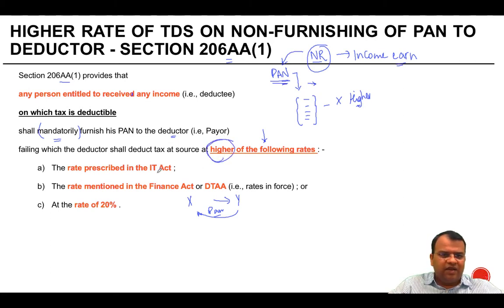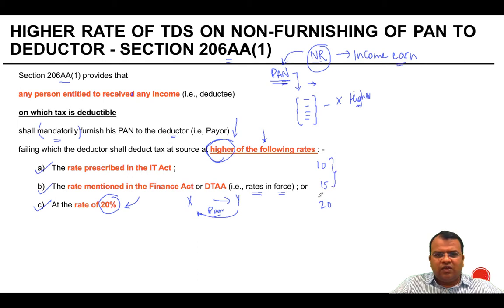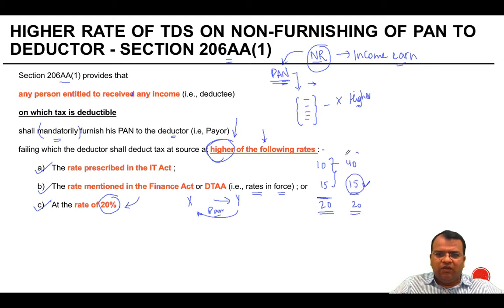The rates to be compared are: the rate prescribed under the IT Act, the rate mentioned in the Finance Act or DTAA (i.e., rates in force), or 20% — whichever is higher. So the minimum effective rate is 20%. For example, if the IT Act rate is 10%, the DTAA rate is 15%, and the third value is 20%, then 20% will apply. However, if the IT Act rate is 40%, the DTAA rate is 15%, and the 20% floor applies, then since the Act rate is higher than 20%, 40% would apply. But if the Act rate is 40% and there is no treaty benefit, it will not go below 20%.